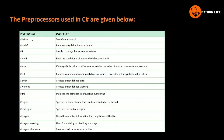The types of preprocessors mostly used in C-Sharp are: first, define — which defines a symbol — and undefine, which removes it.